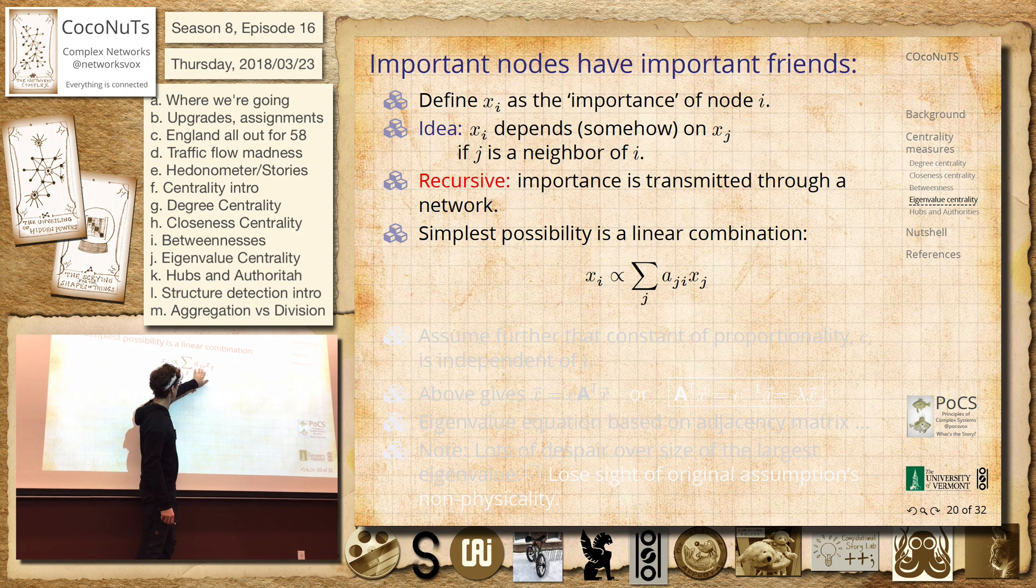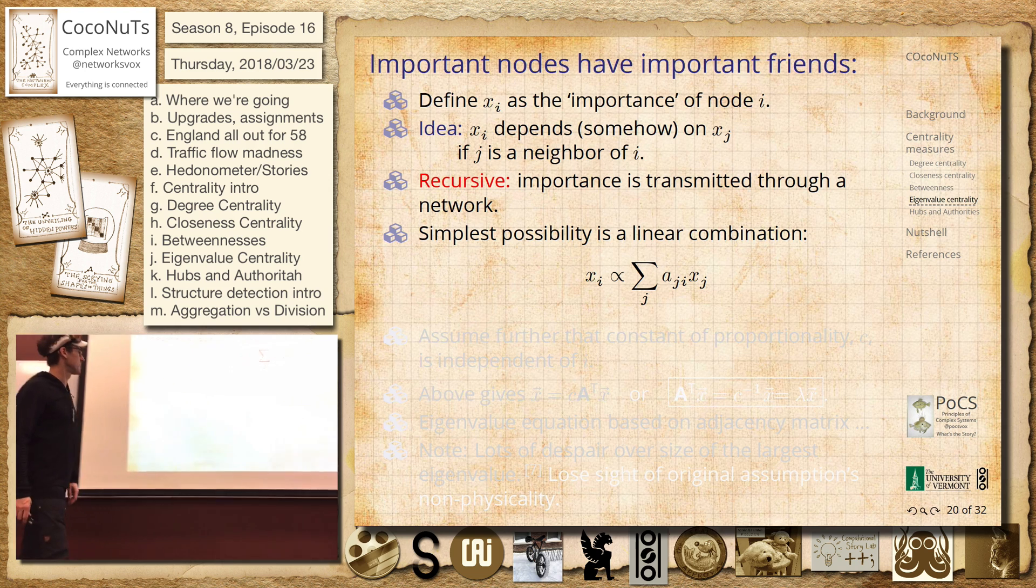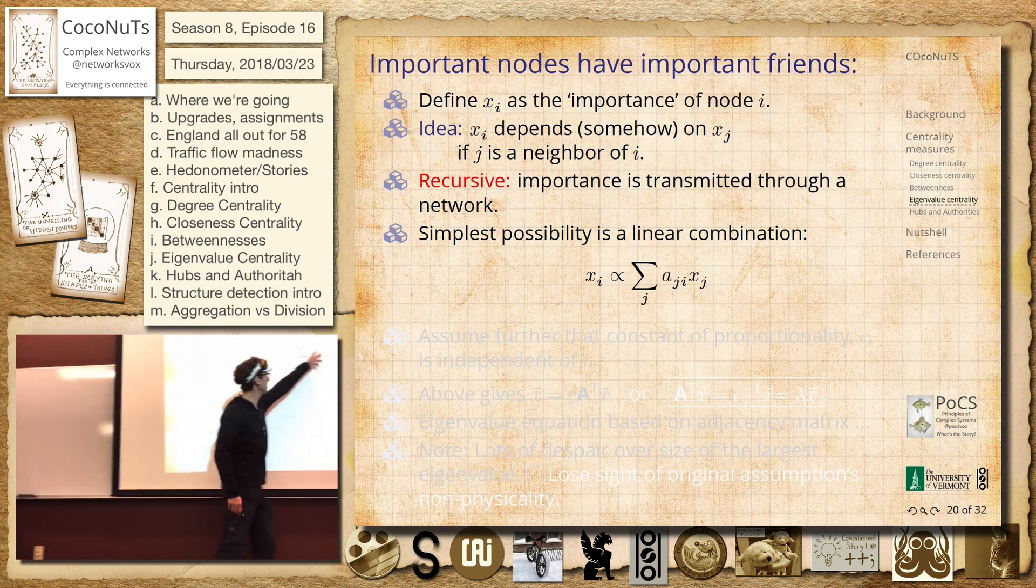And it's simply, this is our adjacency matrix. So this is a 1 if j points to i. So if there's a link going from j to i, which for undirected ones, this is a symmetric thing.